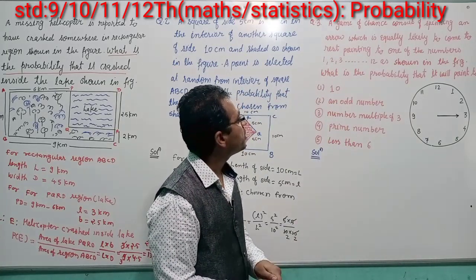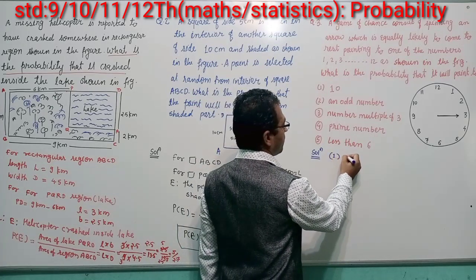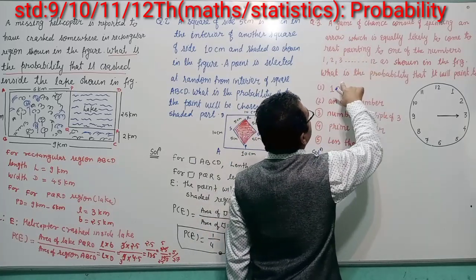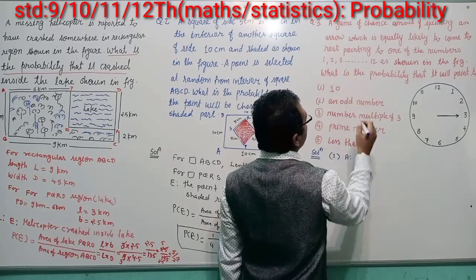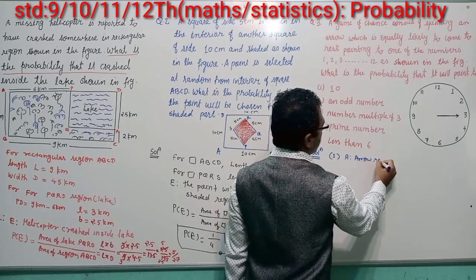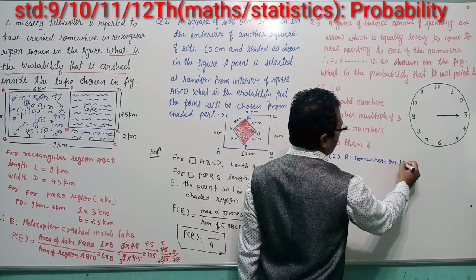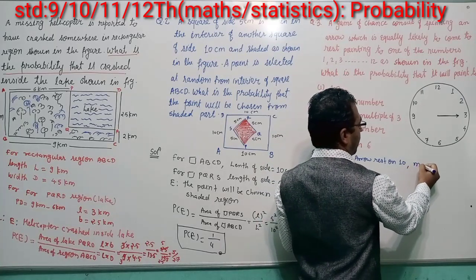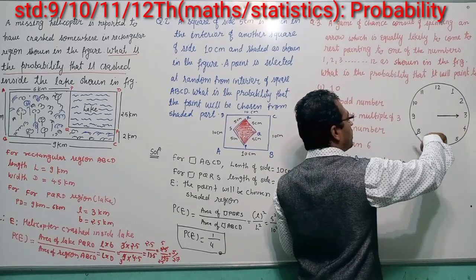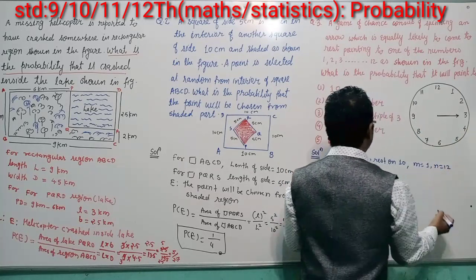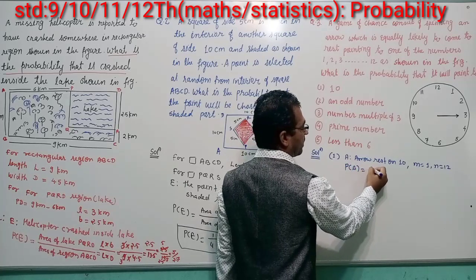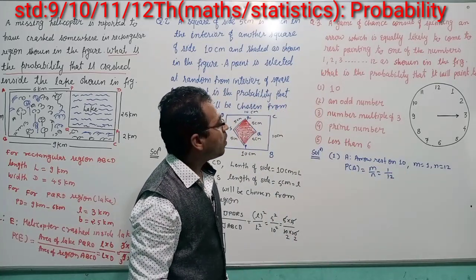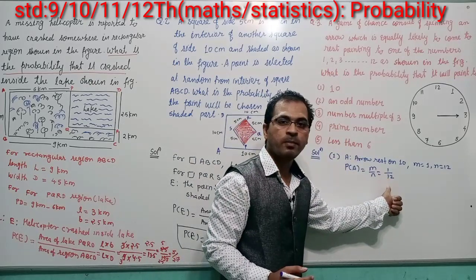Sub-question A: let event A be that the arrow rests on 10. How many times does 10 appear? Just once. So your favorable event m = 1 and total number of outcomes n = 12. P(A) = m/n = 1/12. The probability that the arrow comes to rest on 10 is 1/12.